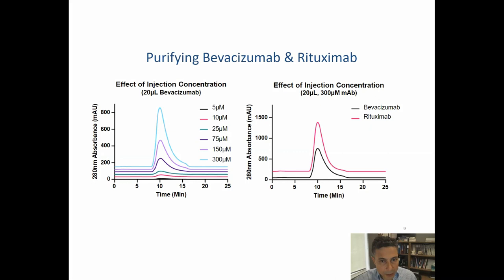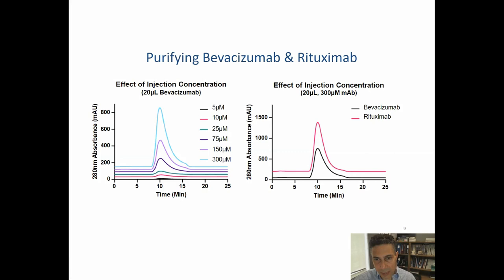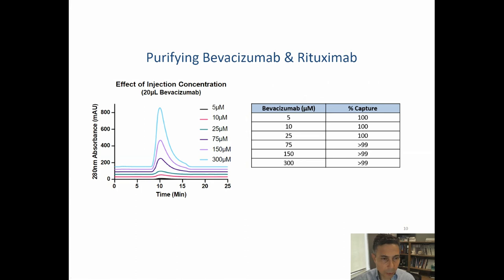We also evaluated injection concentration. While earlier we increased volume at constant concentration, here we kept volume constant and increased the concentration. Each injection up to 300 micromolar bevacizumab was still captured and retained on the resin until the elution buffer was applied. The overlaid chromatograms for bevacizumab and rituximab at maximum concentration — 300 micromolar, 200 microliter injection — are shown.